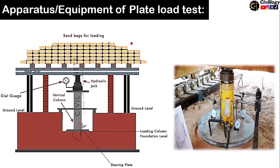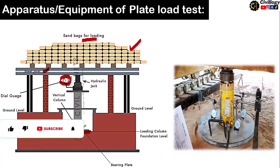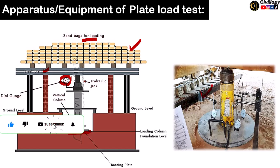Regarding apparatus and equipment, the load is applied either manually or automatically. Sandbags can be used for loading. A steel joist is used to apply a uniform load on the hydraulic jack, and a dial gauge is used to measure the settlement. The ground level and the point under consideration for settlement measurement are also shown in the real picture of the hydraulic jack on the ground.